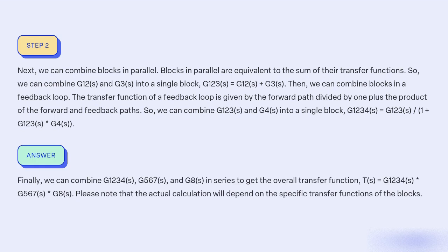Finally, we can combine G1234(s), G567(s), and H(s) in series to get the overall transfer function, T(s) equal to G1234(s) * G567(s) * H(s). Please note that the actual calculation will depend on the specific transfer functions of the blocks.